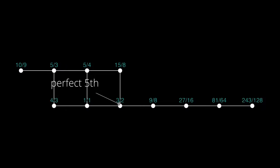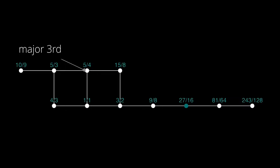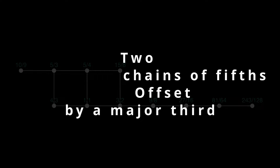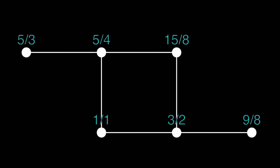Stacking fifths in this direction — basically two chains of fifths offset by a major third — we can form the chord with the following intervals: a major third, a fifth, the major seventh, the nine, and the major sixth. There it is in octave-reduced form.